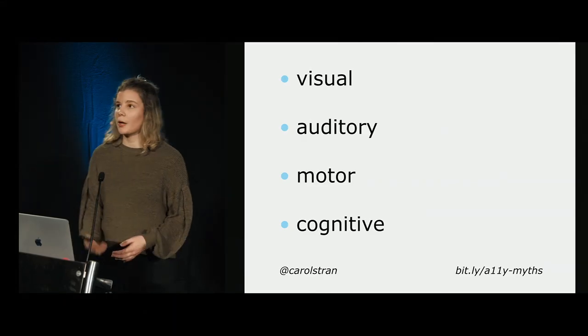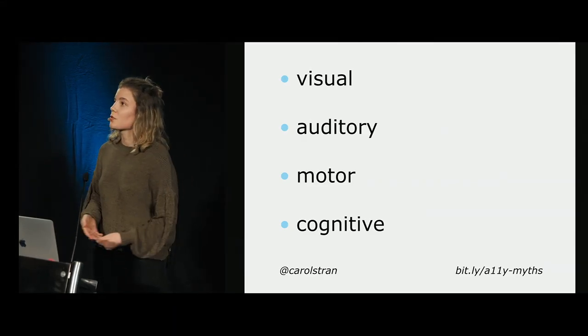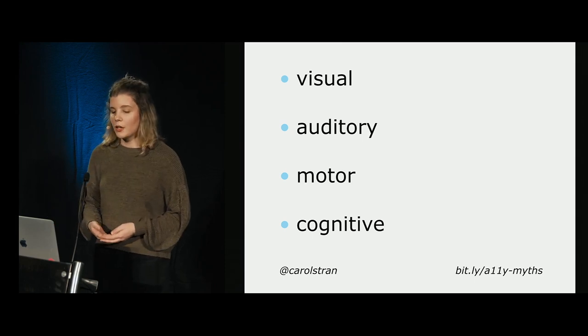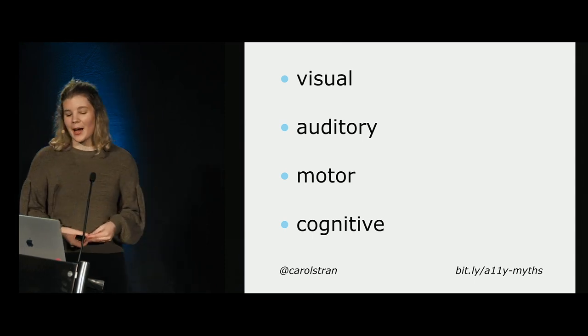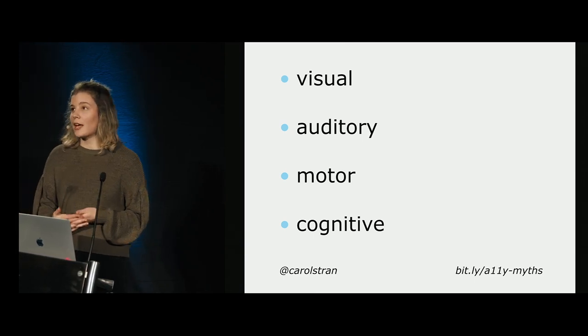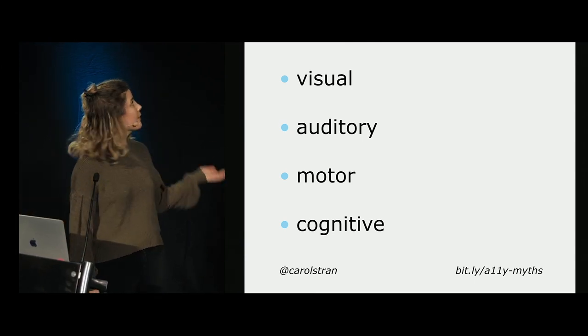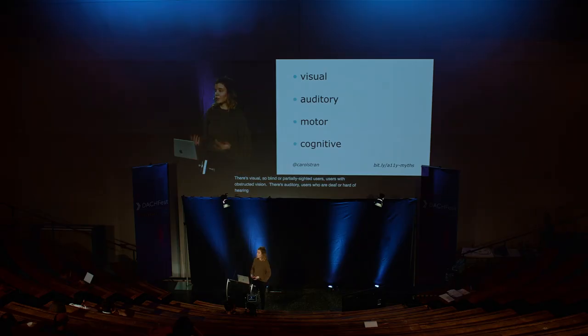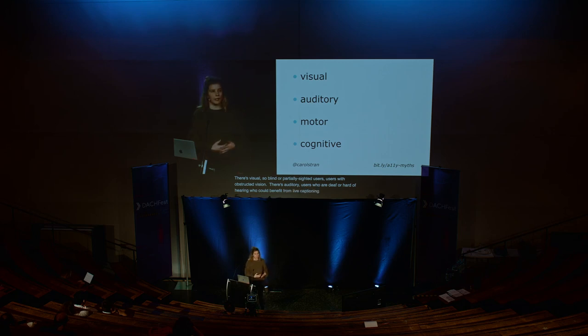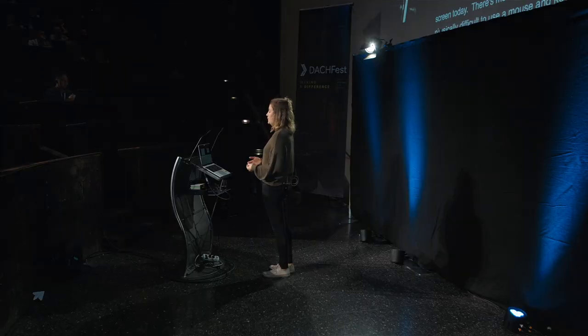There's visual — blind or partially sighted users, users with obstructed vision, colorblindness, or even aging parents. There's auditory — users who are deaf or hard of hearing, who could benefit from live captioning or transcripts of audio material. There's motor and mobility — those who find it physically difficult to use a mouse or keyboard and make use of assistive technologies. And cognitive — those who struggle with memory or understanding, perhaps because of dyslexia, autism, or other learning disabilities.